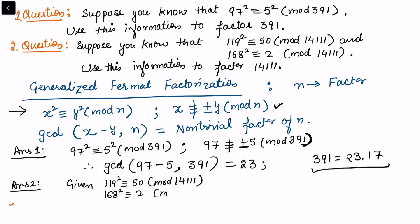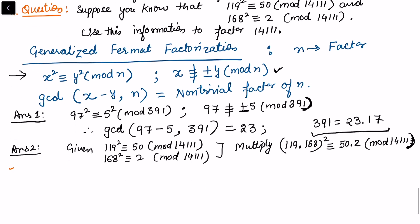Now multiply these two congruences. When I multiply these two, we get (119 × 168)² on the left side, and on the right side we get 50 × 2, all mod 14111. In this case, 50 can be written as 10 × 5.